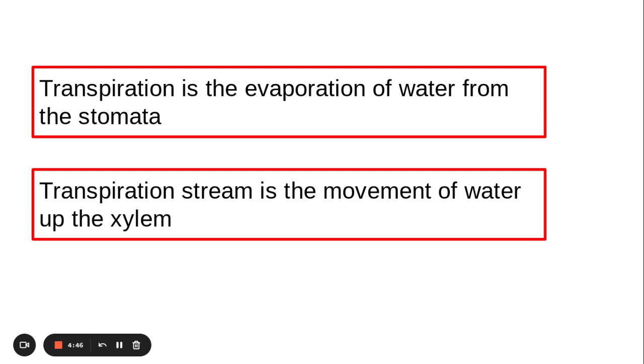We need to know that transpiration is the evaporation of water from the leaves or through the stomata, but we also need to know that the transpiration stream is the movement of water up the xylem from the roots to the leaves. They're different things, make sure you know the difference.